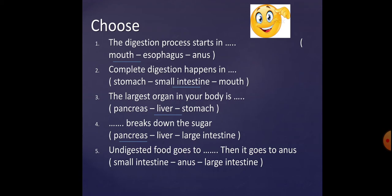Number five: undigested food — the bad parts — goes to the large intestine and exits through the anus to the outside of the body. Thank you so much, and hope to see you in the next lesson!